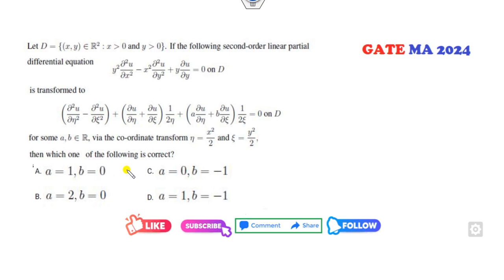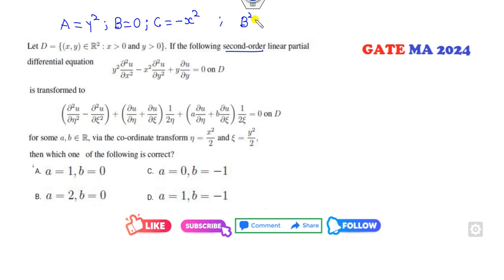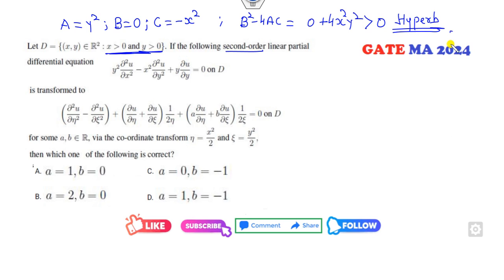Now look at the next partial differential equation problem. We classify it: A equals y², B equals 0, C equals minus x². So B² minus 4AC equals 0 plus 4x²y². Since both x and y are positive, this number is positive, meaning the equation is hyperbolic.